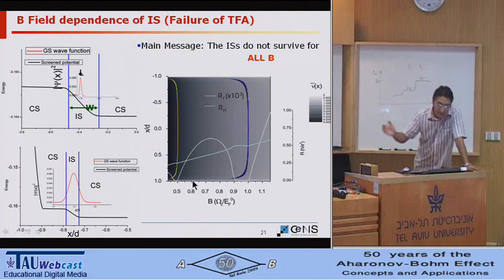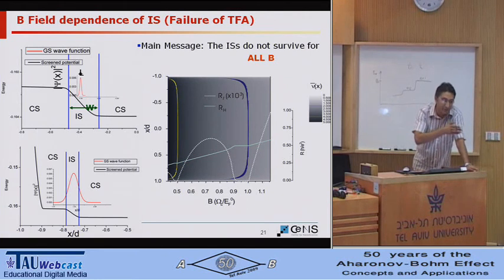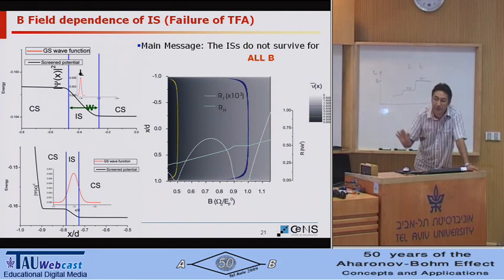So by changing the magnetic field, you have incompressible strip, non-incompressible strip, incompressible strip, no. And you go from plateau to other plateau. So you can really do calculations in between two plateau transition regions.